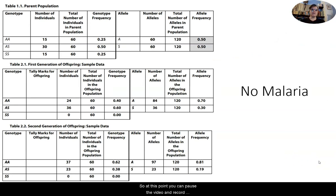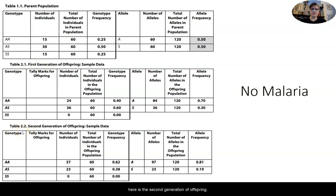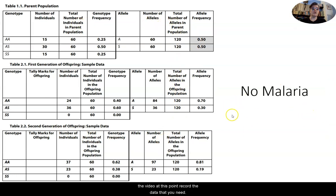At this point, you can pause the video and record the data that you need. Table 1.1 right here is the parent population — there's that allele frequency we just talked about. Table 2.1 is the first generation, or time two. And then table 2.2 is the second generation of offspring. This is the sample data for all three times for the area where there is no malaria. You'll also notice that there are the genotypes right there for you as well.